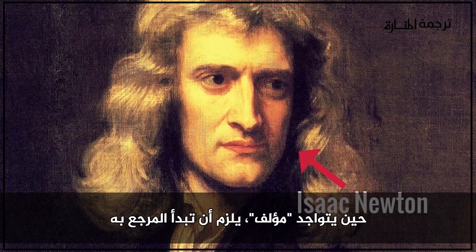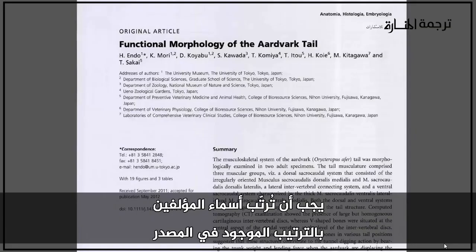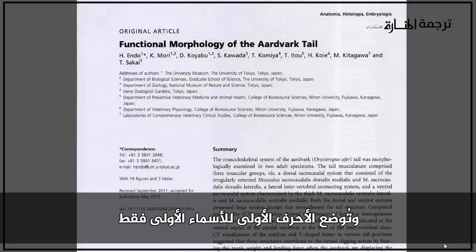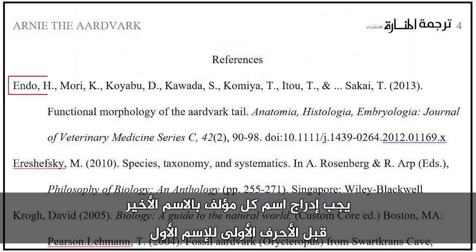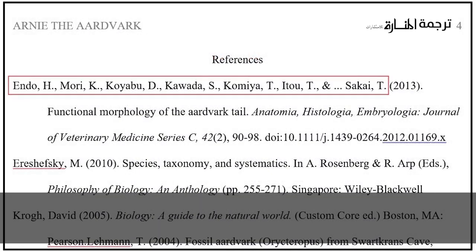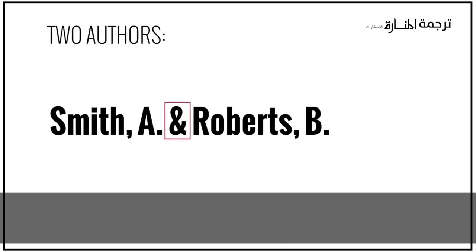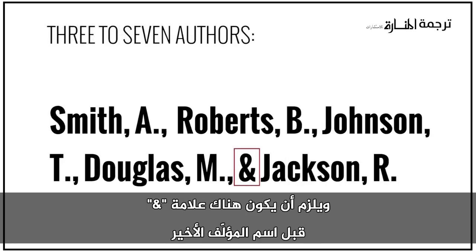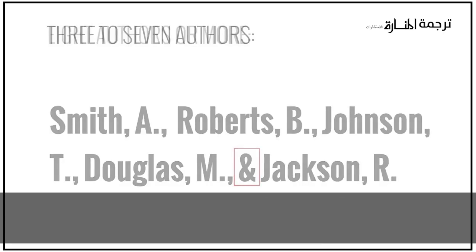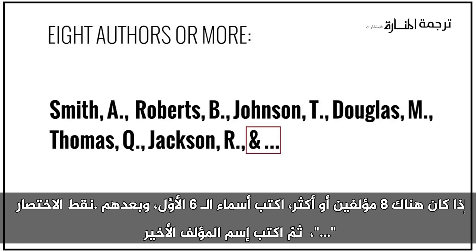Any time there is an author, your reference should start there. Authors should be listed in the order they appear in the source, and initials only are used for first names. Each author's name should be listed with the last name before the first name initials. If there are two authors, they should be separated by an ampersand. If there are three to seven authors, they should all be listed with an ampersand before the last author's name. If there are eight or more authors, list the first six, followed by ellipses, and then the last author's name.